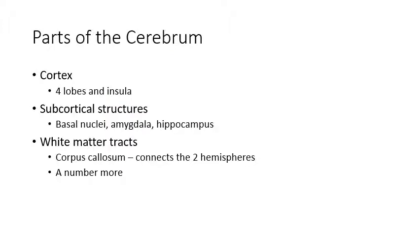The cerebrum can be divided into the cortex and subcortical structures. The cortex is the top squiggly part of the cerebrum, and beneath it you have the subcortical structures. The cortex is divided into four lobes and the insula. The main subcortical structures are the basal nuclei, the amygdala, and the hippocampus. You also have white matter tracks connecting the two hemispheres, the most prominent being the corpus callosum.